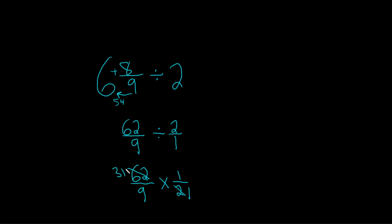Now we just multiply straight across. 31 times 1 equals 31. 9 times 1 equals 9.